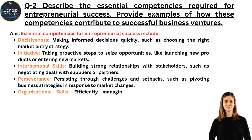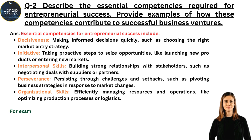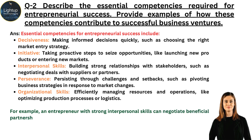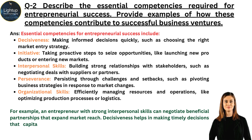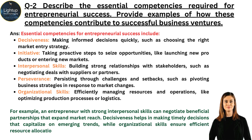Additional essential competencies include: interpersonal skills — building strong relationships with stakeholders, such as negotiating deals with suppliers or partners; and organizational skills — efficiently managing resources and operations, like optimizing production processes or logistics. For example, an entrepreneur with strong interpersonal skills can negotiate beneficial partnerships that expand market reach. Decisiveness helps capitalize on emerging trends, while organizational skills ensure efficient resource allocation and cost management, contributing to sustainable growth.